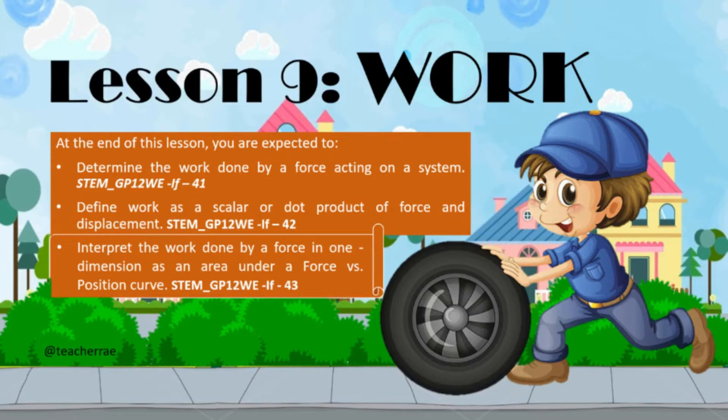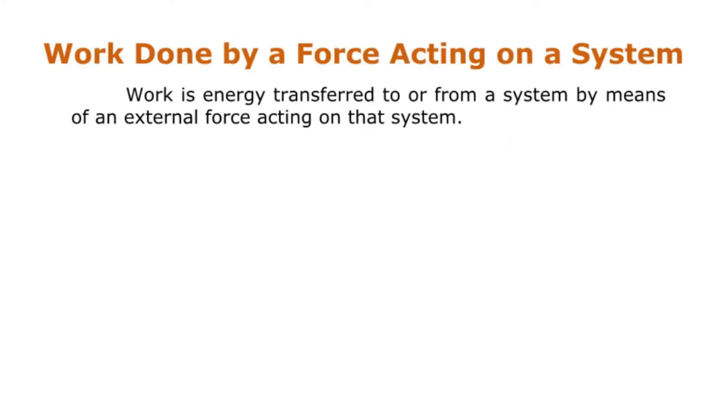In physics, many times words have meanings that are not consistent with how these same words are used in everyday life. For example, in physics, work takes on a technical meaning that often contradicts its everyday usage. Work relates to how a force acts while a system undergoes a displacement. If no displacement occurs, then in the realm of physics, no work is done. For the same displacement, a larger force does more work. However, if the force is perpendicular to the displacement, then no work is done.